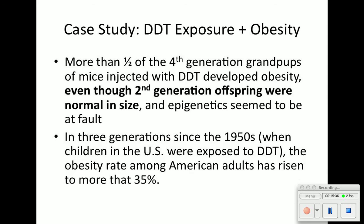Another case study looks at DDT exposure and obesity. DDT is the insecticide that was used to kill mosquitoes — they were spraying it everywhere in the 1950s. They've correlated DDT with obesity, especially through the second generation. More than half of the fourth-generation grandpups of mice injected with DDT developed obesity.